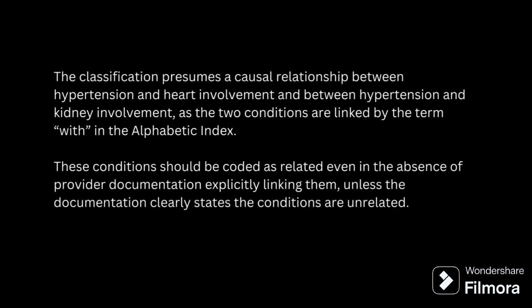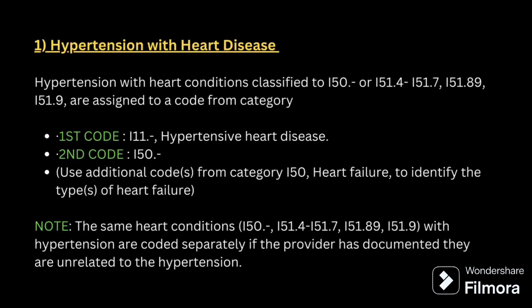The classification presumes a causal relationship between hypertension and heart involvement, and hypertension and kidney involvement, as the two conditions are linked by the term within the alphabetical index. These conditions can be coded as related even in the absence of documentation explicitly linking them, unless documentation clearly states they are unrelated. For hypertension with heart disease, we give a combination code I11 as the primary code, and a second code for the type of heart failure if heart failure is present.